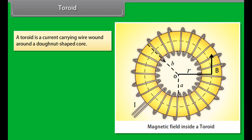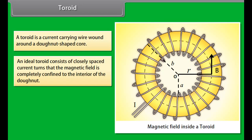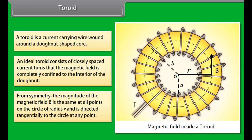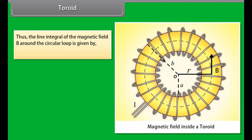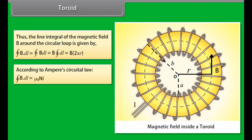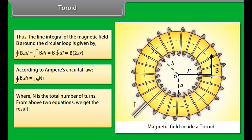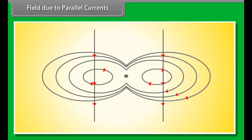Toroid: A toroid is a current carrying wire wound around a donut-shaped core. An ideal toroid consists of closely spaced current turns such that the magnetic field is completely confined to the interior. By symmetry, the magnitude of B is the same at all points on the circle of radius R, directed tangentially. The line integral of B around the loop gives B times 2 pi R. By Ampere's Circuital Law, closed integral of B dot dL = mu naught N I, where N is the total number of turns. Thus B = mu naught N I divided by 2 pi R.